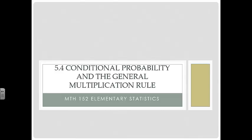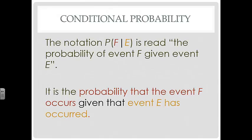5.4 conditional probability and the general multiplication rule. Conditional probability is when you have the probability of an event given that another event has occurred. The notation P of F given E is read the probability of event F given event E — the probability that event F occurs given that E has already occurred.